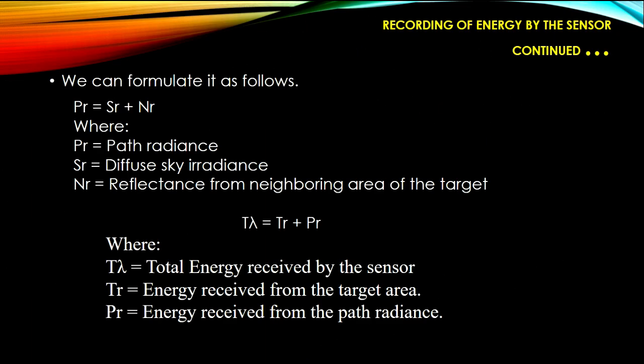We can formulate it as follows: PR = SR + NR, where PR equals path radiance, SR equals diffused sky irradiance, and NR equals reflectance from the neighboring area of the target. In the second equation, Tλ = TR + PR, where Tλ equals total energy received by the sensor, TR equals energy received from the target, and PR equals energy received from path radiance.